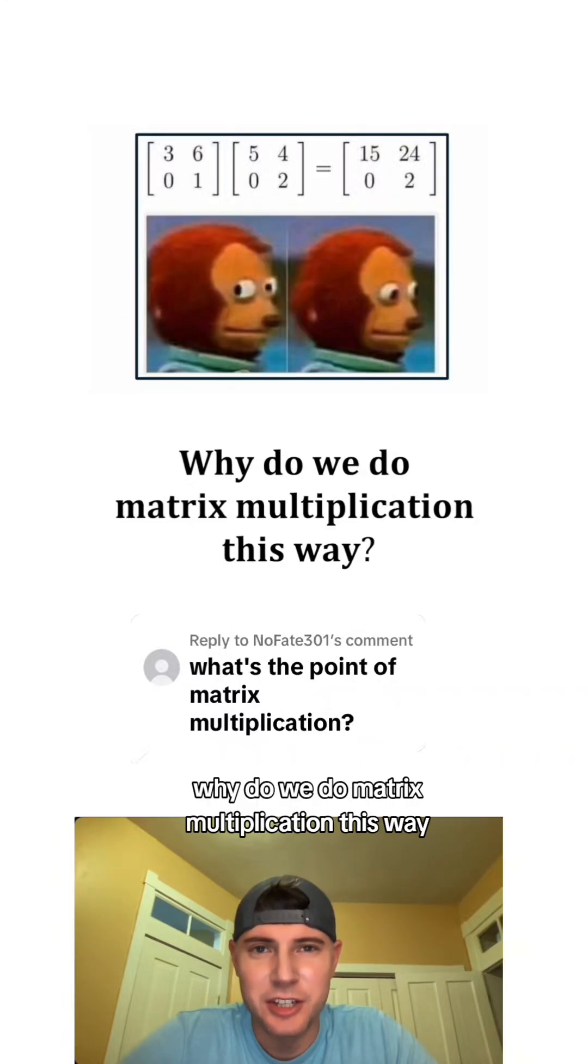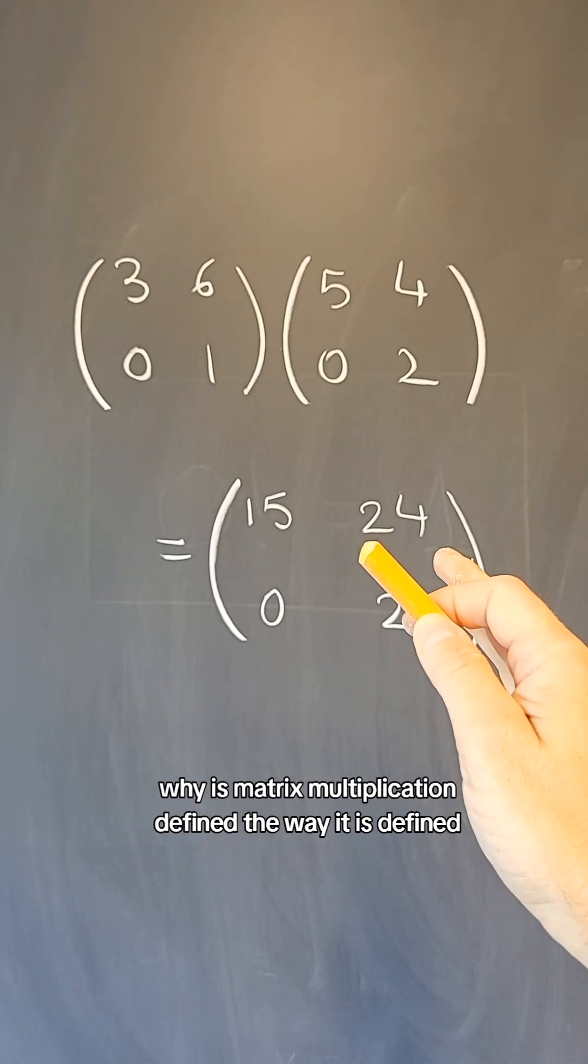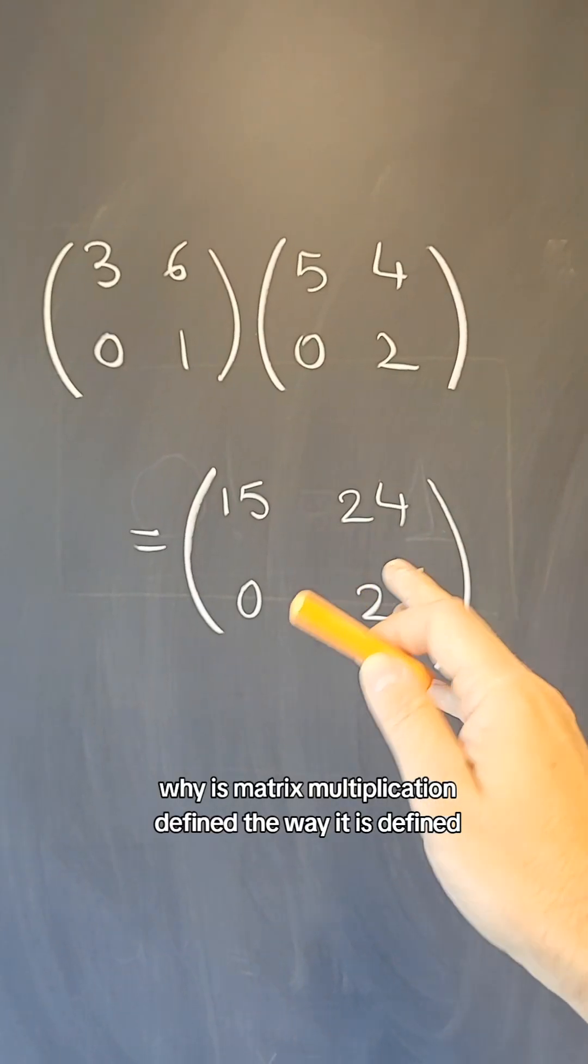Why do we do matrix multiplication this way? Why is matrix multiplication defined the way it is defined?